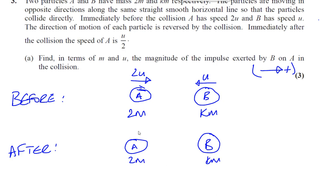But A is now, the directions have been reversed. So A is now moving in this direction with a speed u over 2. And B is now moving in this direction with a speed they didn't tell us. We don't know. So there's a situation before and there's a situation after the collision.